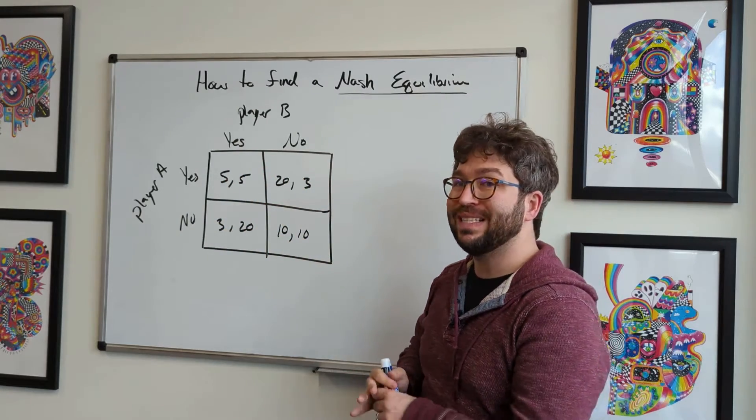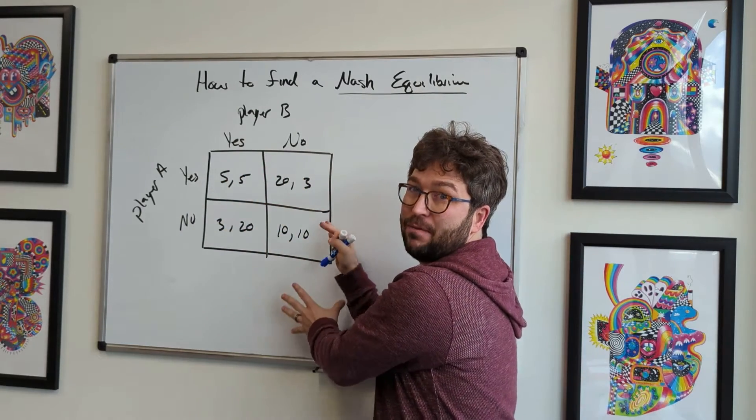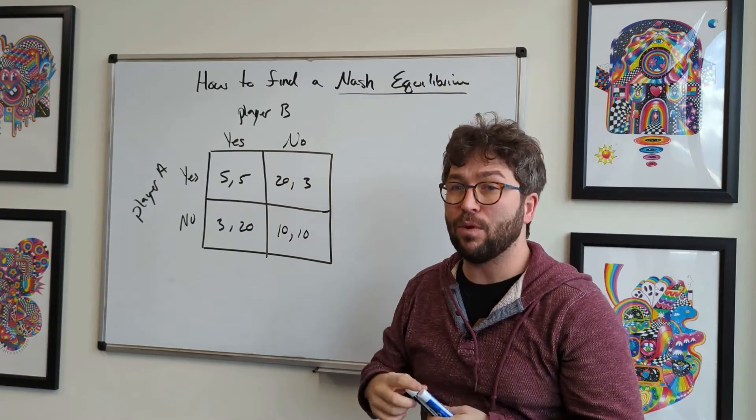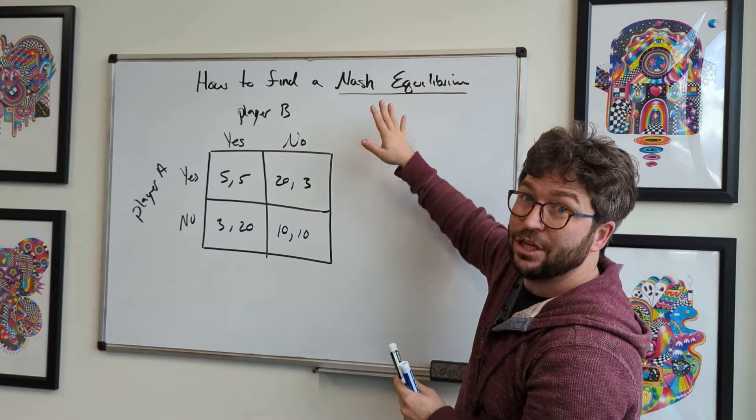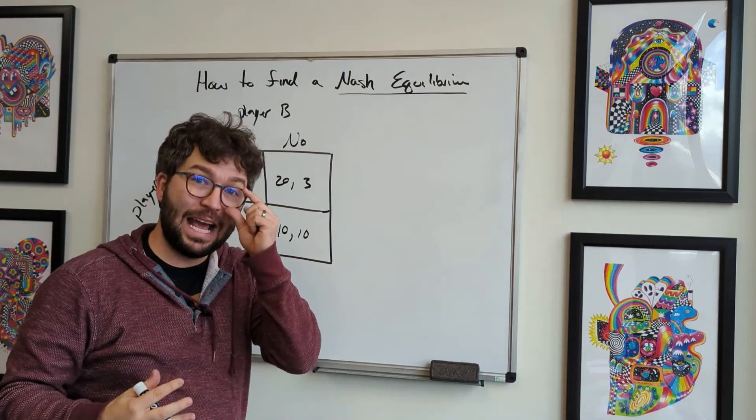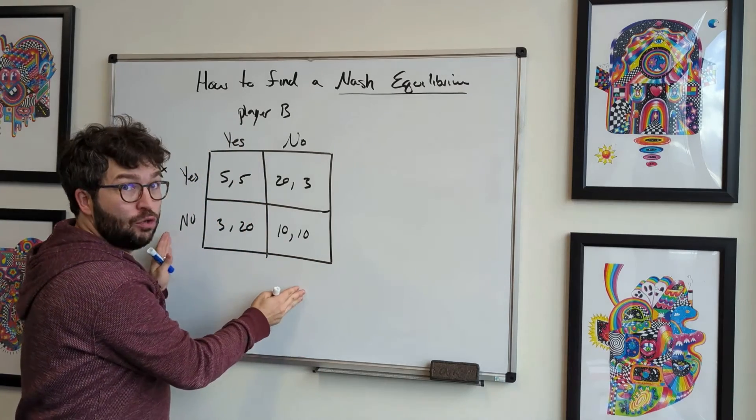I'm not going to go through exactly how to set up a game; that would be a different video. I'm assuming that you are up to this point in your knowledge and you're just trying to get a little more information on how to find a Nash equilibrium. I'm going to go over what I believe is the easiest way to find a Nash equilibrium in a simple two-by-two game.